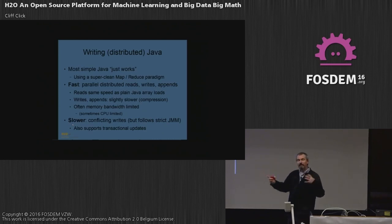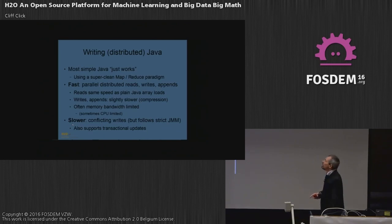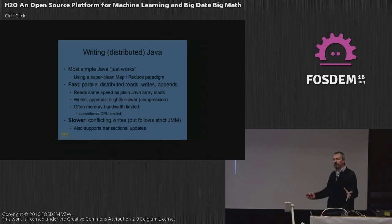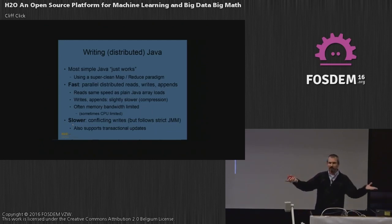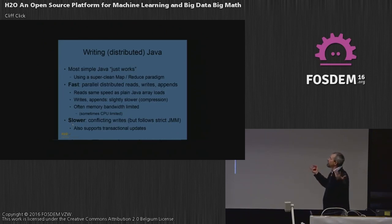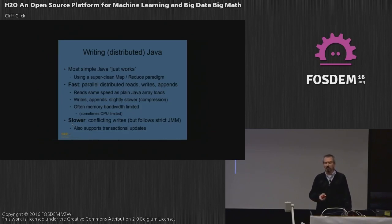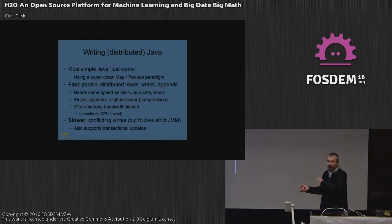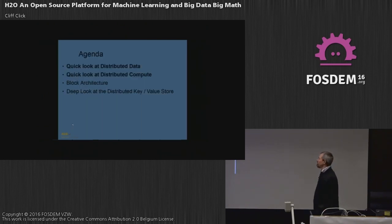I'm going to talk about what kind of code people end up writing, and then what implementation takes to make that work. Most simple Java just works, and it's mostly done with a very clean map-and-reduce paradigm. It's theoretically clean — a map from type A to type B, and a reduce takes two B's and makes one B. It's fast, parallel, distributed, always. Reads run at full Java payload speeds. Writes go a little bit slower because you have to do the compression step. And we implement the entire Java memory model semantics, even on distributed clusters — exact semantics.